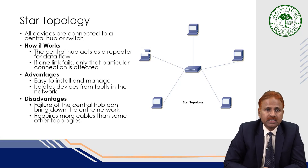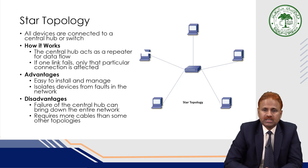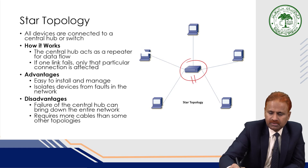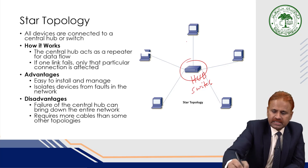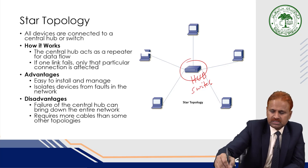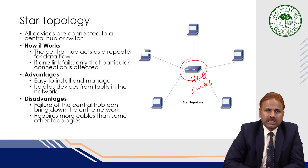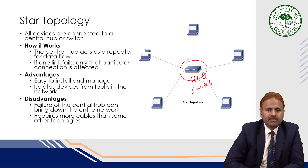In star topology, there is a central device known as a hub — sometimes it is known as a switch as well. All devices are directly connected to this central device via separate lines. All devices are connected to a central hub or switch, and the central hub acts as a repeater for data flow.